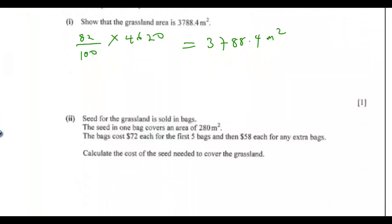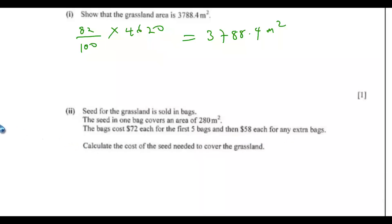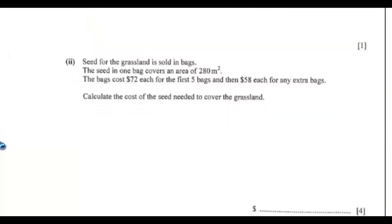Part 2, seed for the grassland is sold in bags. The seed in one bag covers an area of 280 meters squared. The bags cost $72 each for the first five bags and then $58 each for any extra bags. So calculate the cost of the seed needed to cover the grassland.